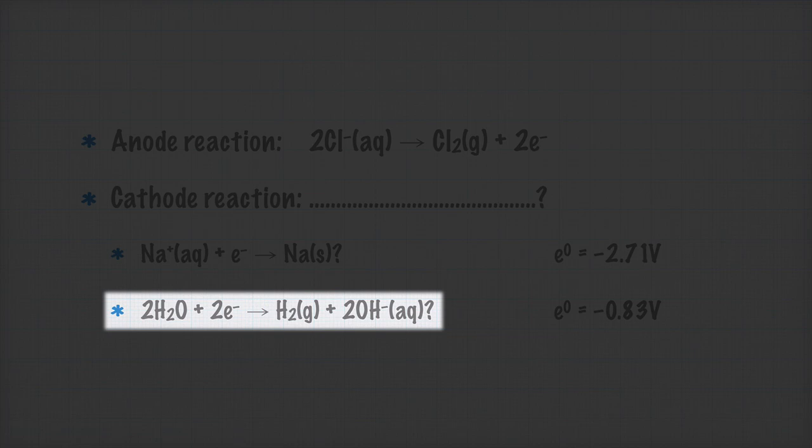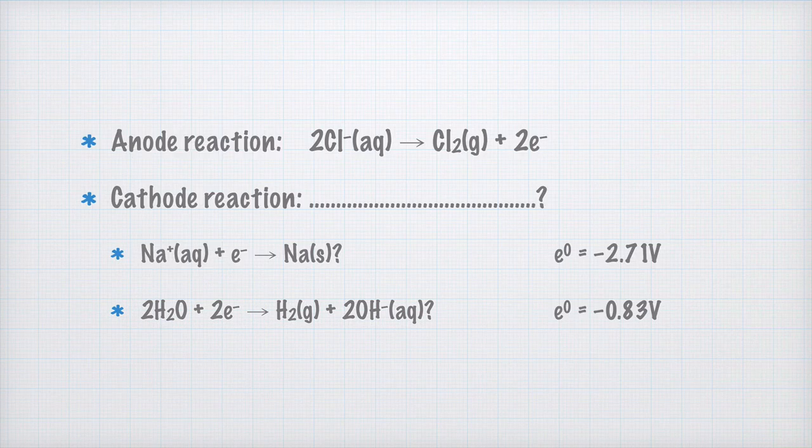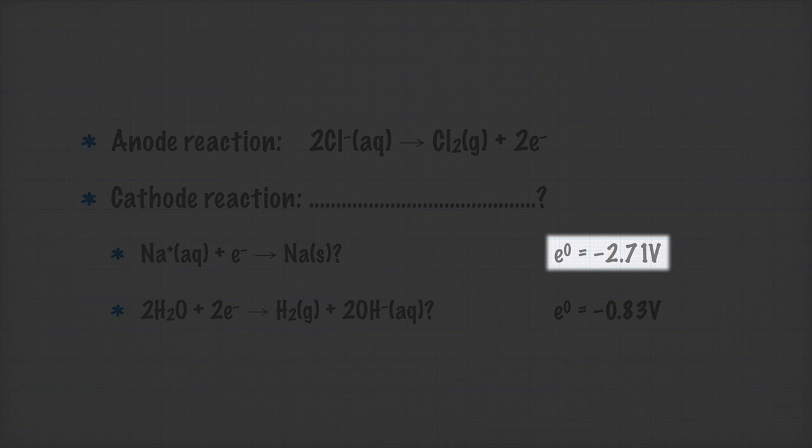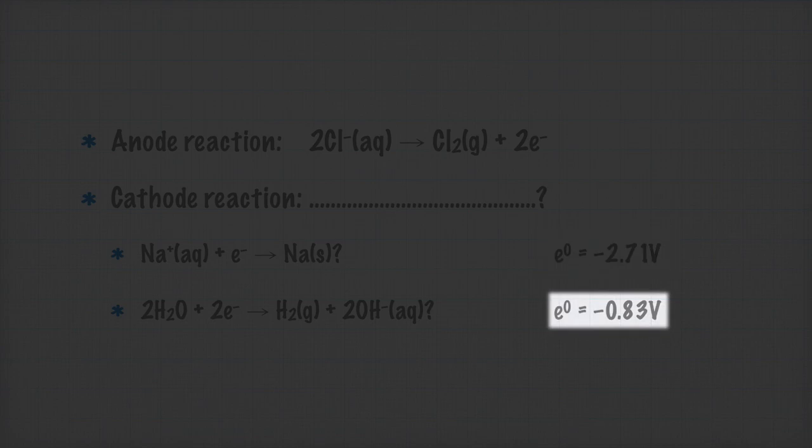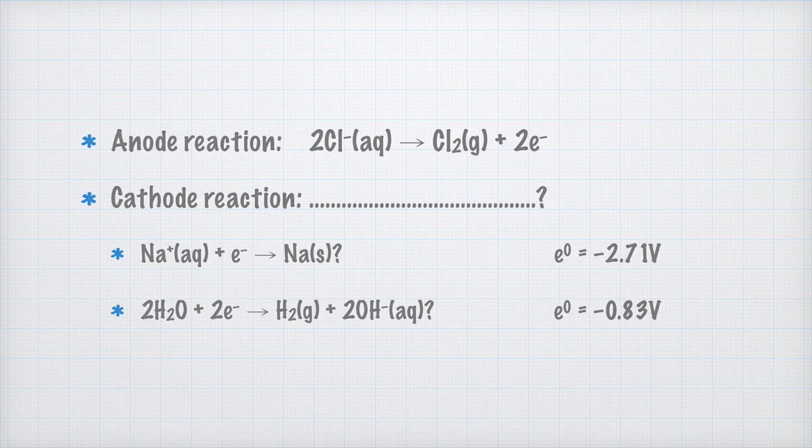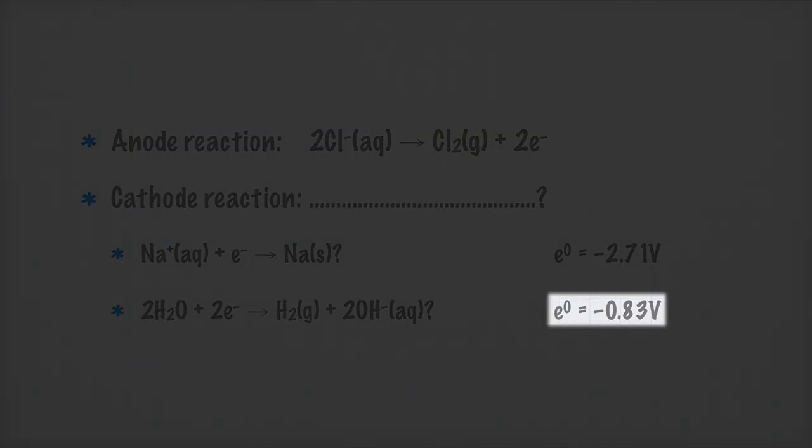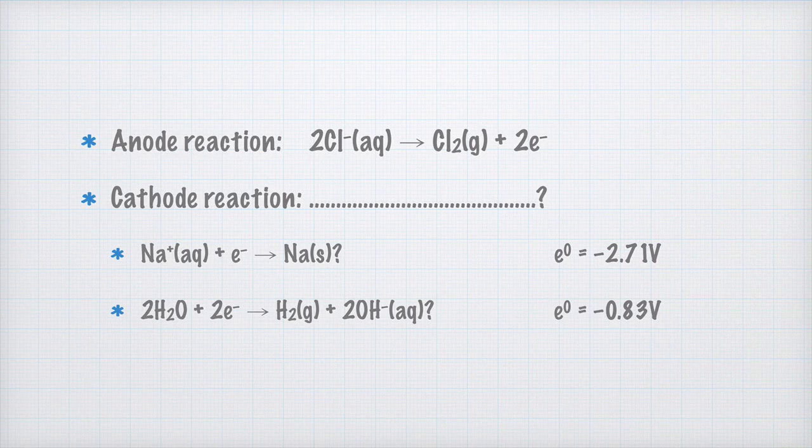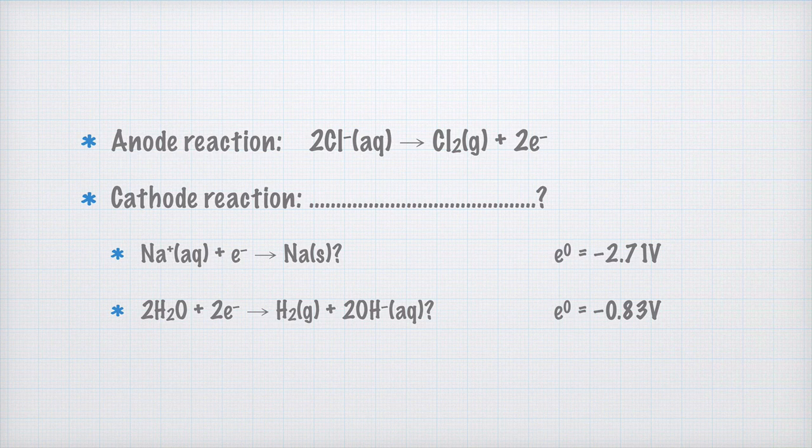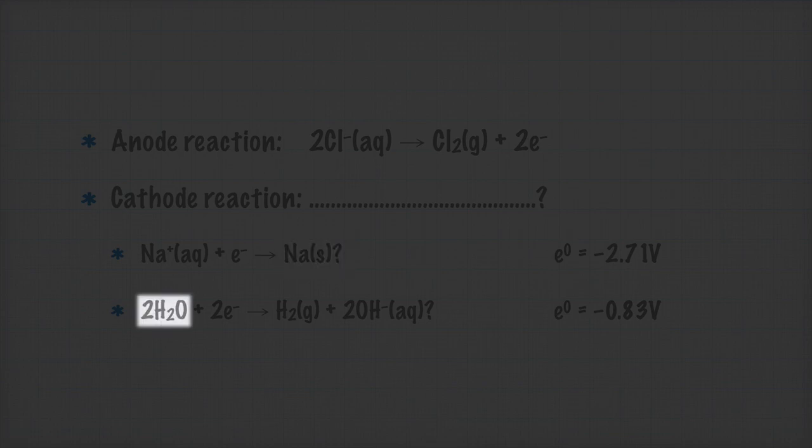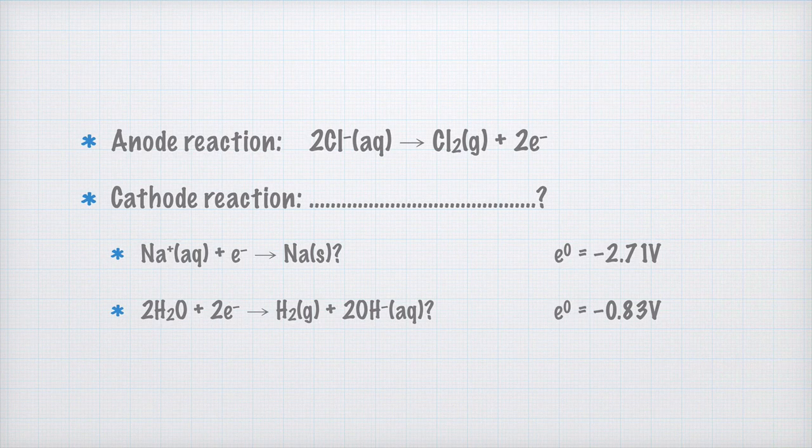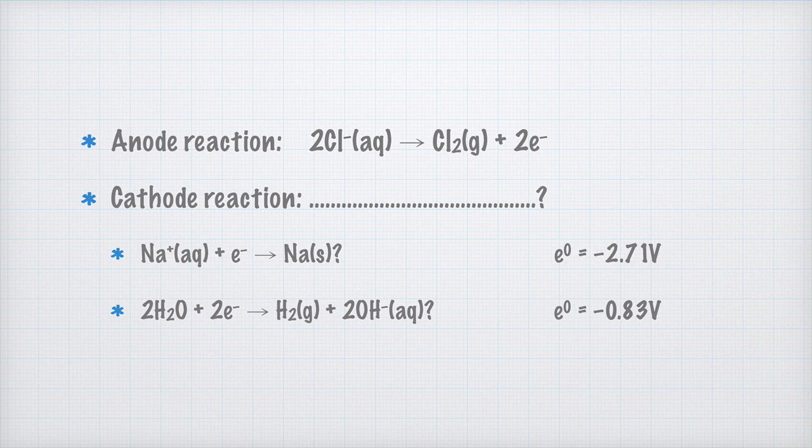Could it be that it is this reaction down here that takes place at the cathode? Now, let's have a look at those standard electrode potentials. The standard electrode potential for sodium is minus 2.71 volts, and for water it is minus 0.83 volts. The standard electrode potential for water is thus greater than the standard electrode potential for sodium. Do you also remember that the greater the standard electrode potential is, the weaker reduction agent it is? This means that sodium is a stronger reduction agent than water, and that any sodium atoms present will reduce water into hydroxide ions and hydrogen gas.